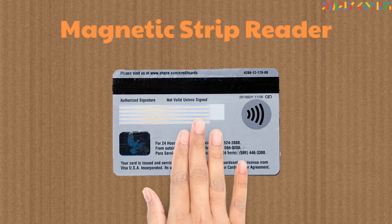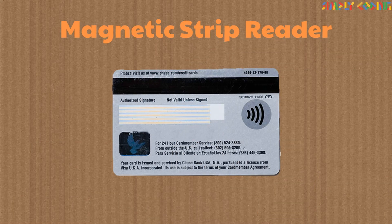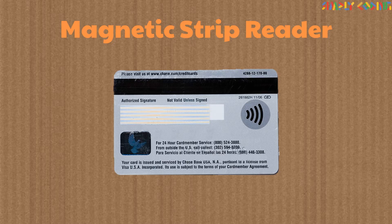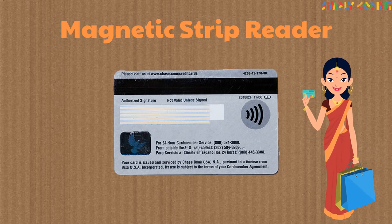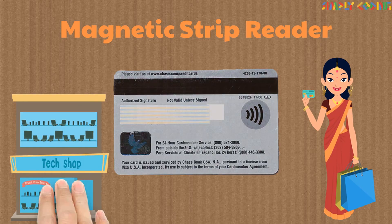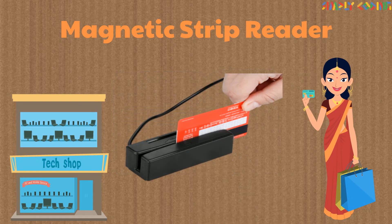Many credit cards and security cards have a magnetic strip on the back. This strip has the user data encoded on it and is read by the machine when swiped. This machine is also called a magnetic strip reader.